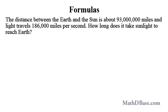Given that the distance between the Earth and the Sun is about 93 million miles, and that light travels 186,000 miles per second, how long does it take sunlight to reach Earth? Since how long is a measure of time, we should use the last form of the speed-distance-time formula. Time is equal to distance over speed.